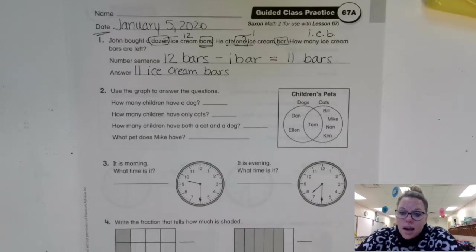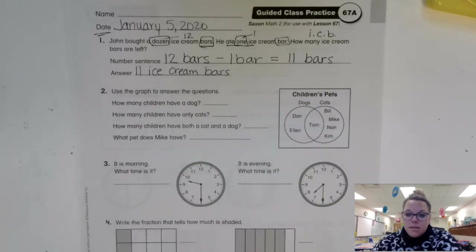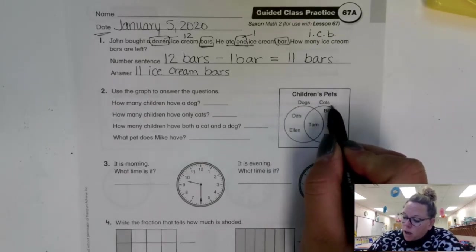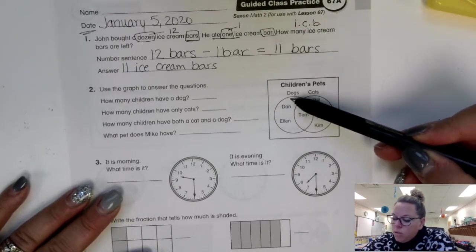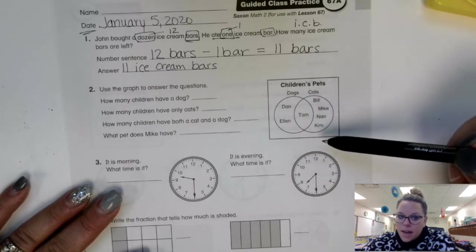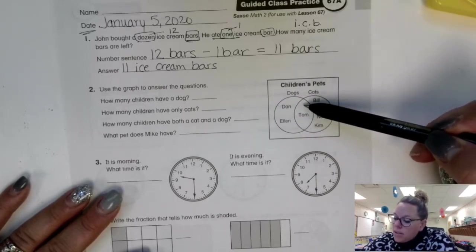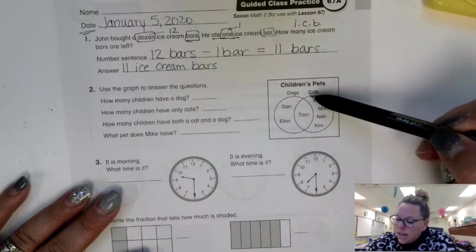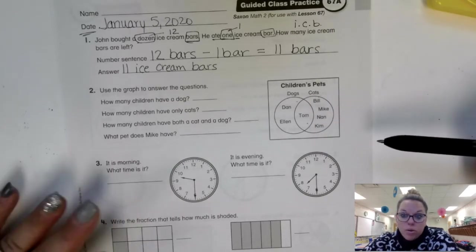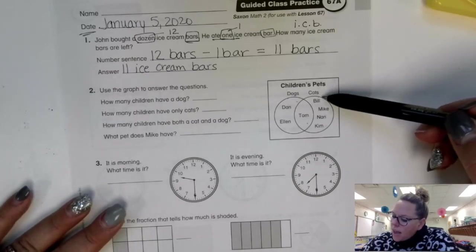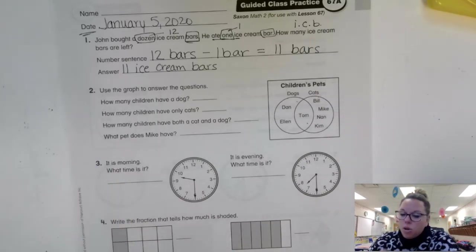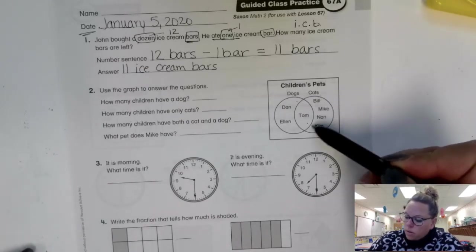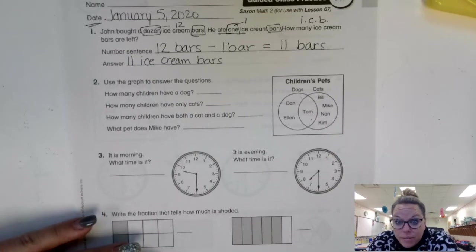Today we get to use our Venn diagram and we're going to use it to answer the questions. So as you can see on our diagram, today our title is children's pets. So we're talking about pets. You can see we're talking about dogs and we're talking about cats. You can see here we have Dan and Ellen who like only dogs or have dogs. You can see that Tom, he's in the middle. He must have a dog and a cat or dogs and cats or dog and cats. And then we have Bill, Mike, Nan and Kim. They have only cats at their house. So remember that we have to look for that word only if we want to do only this one part over here. I even use the word only.